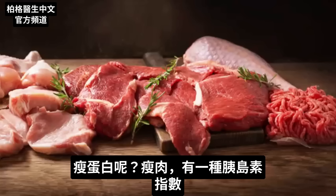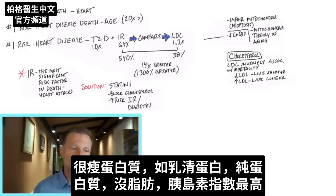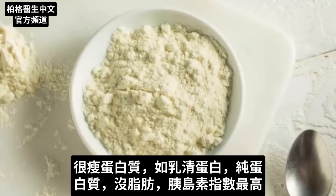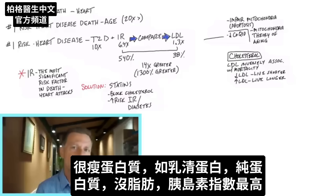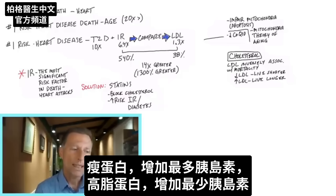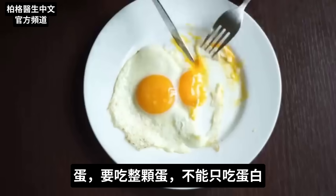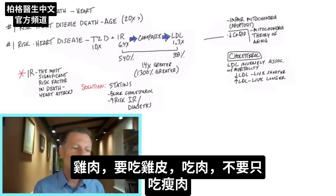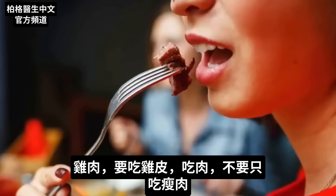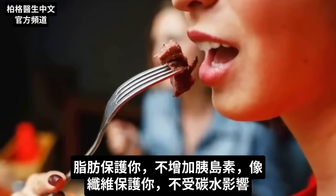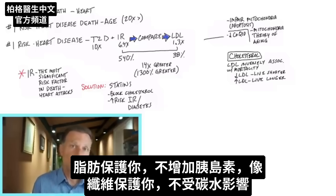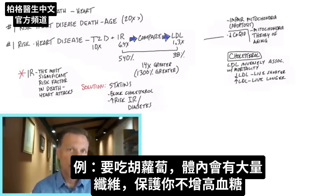What about lean proteins? There's something called the insulin index. Proteins that are more lean — even whey protein, which is purely protein with no fat — are the highest on the insulin index, meaning they trigger insulin the most. Proteins that are the fattiest trigger insulin the least. This is why you eat the whole egg, not the egg white; why you eat chicken with the skin on; and why you don't buy the leanest meat. Fat in proteins protects you against the insulin problem, just as fiber protects you against carbohydrates.